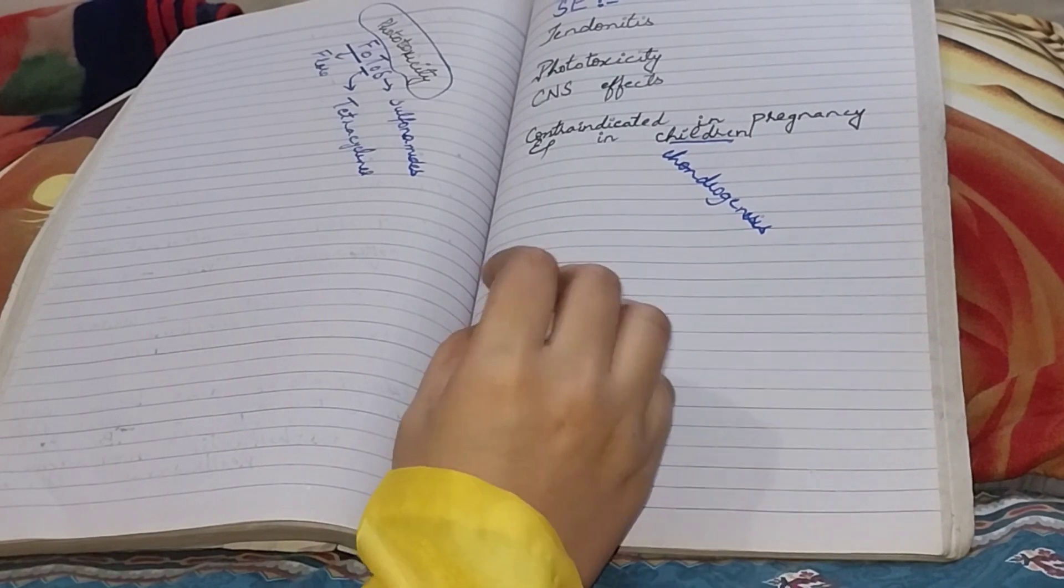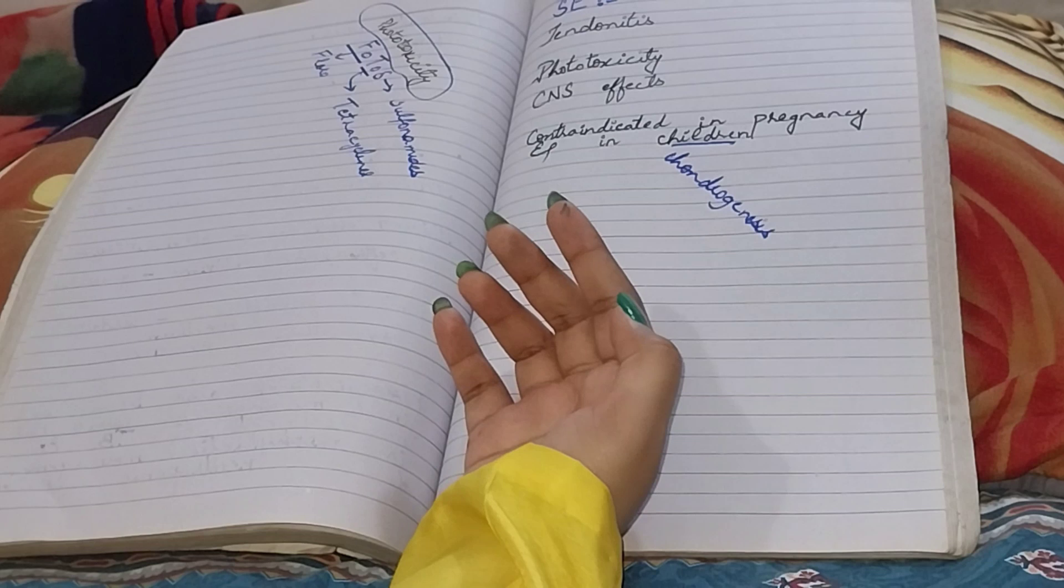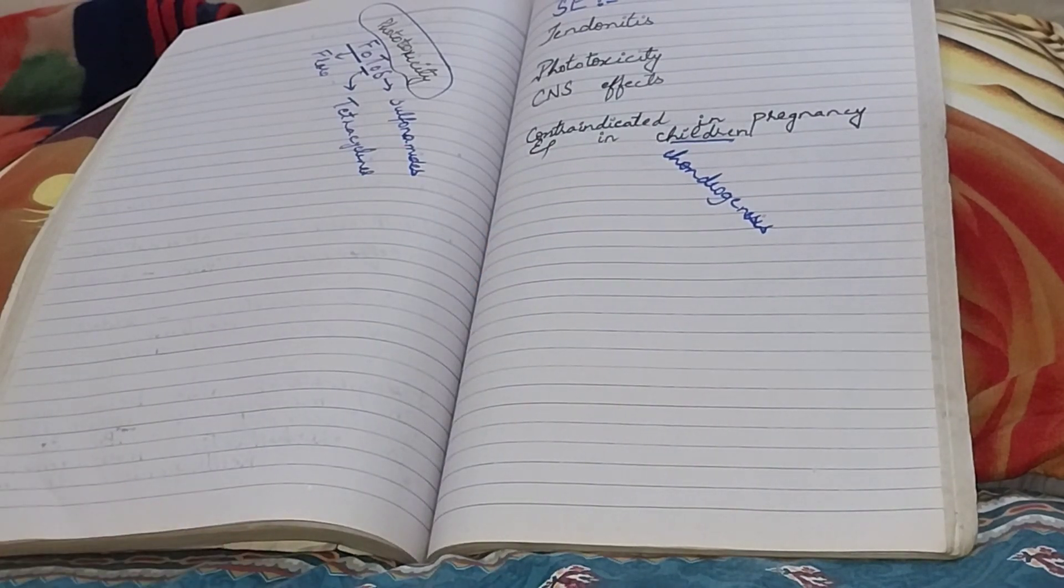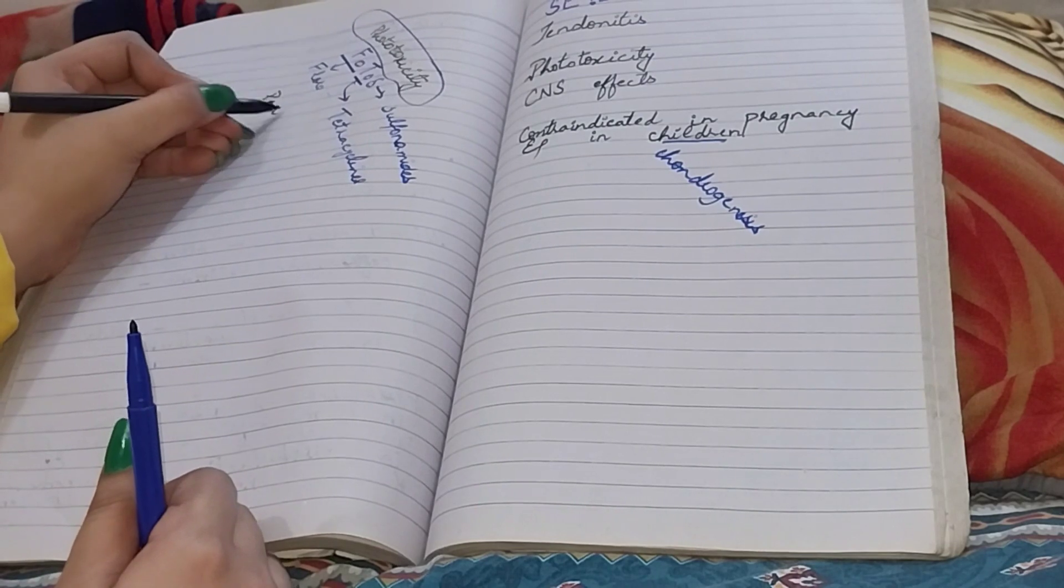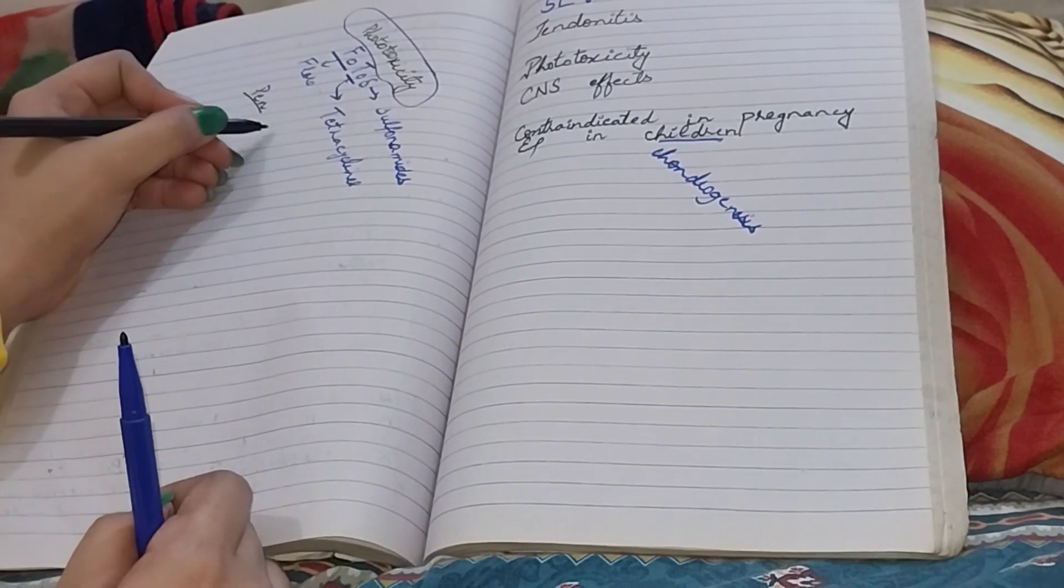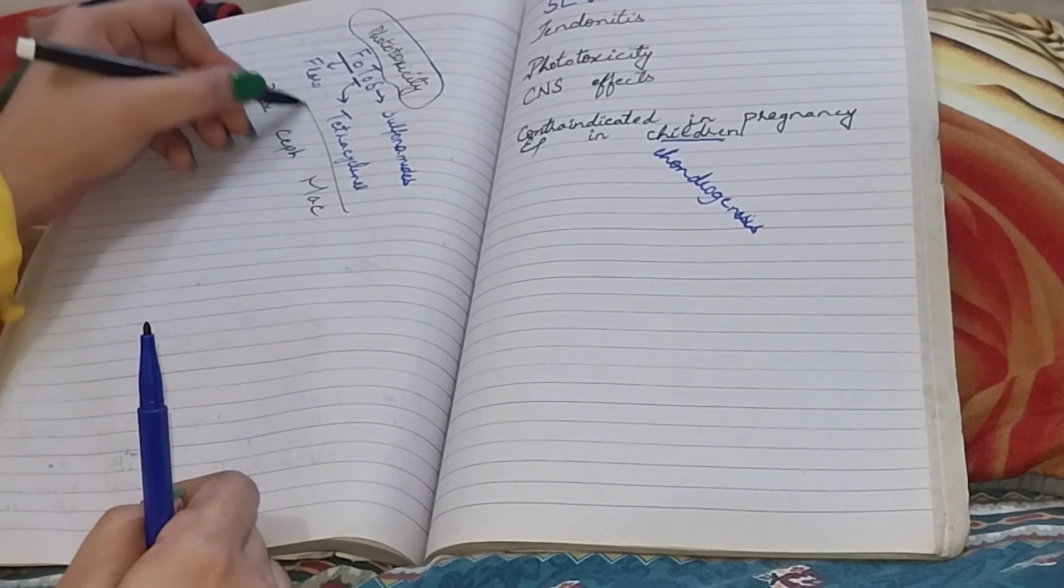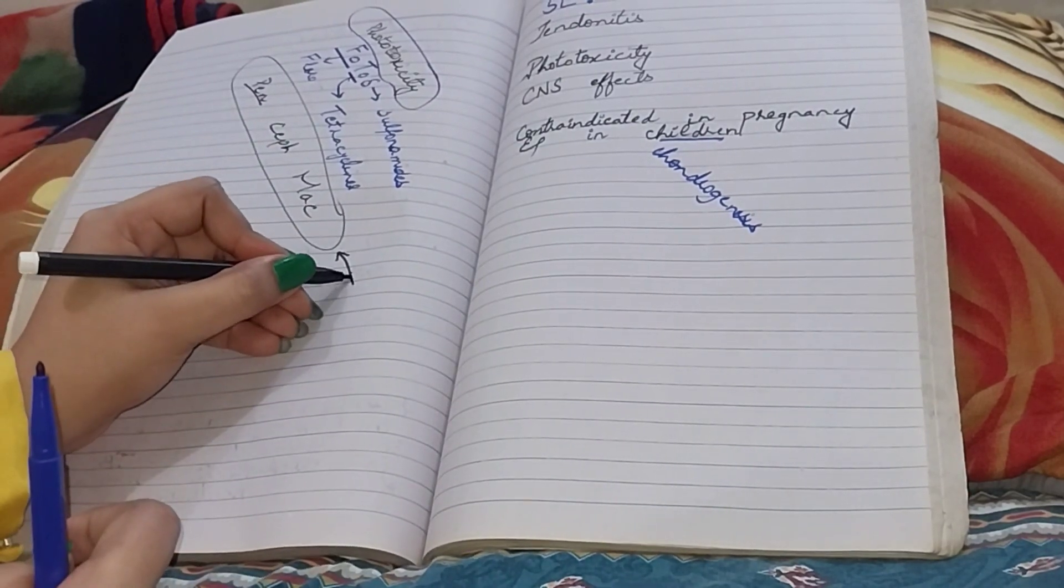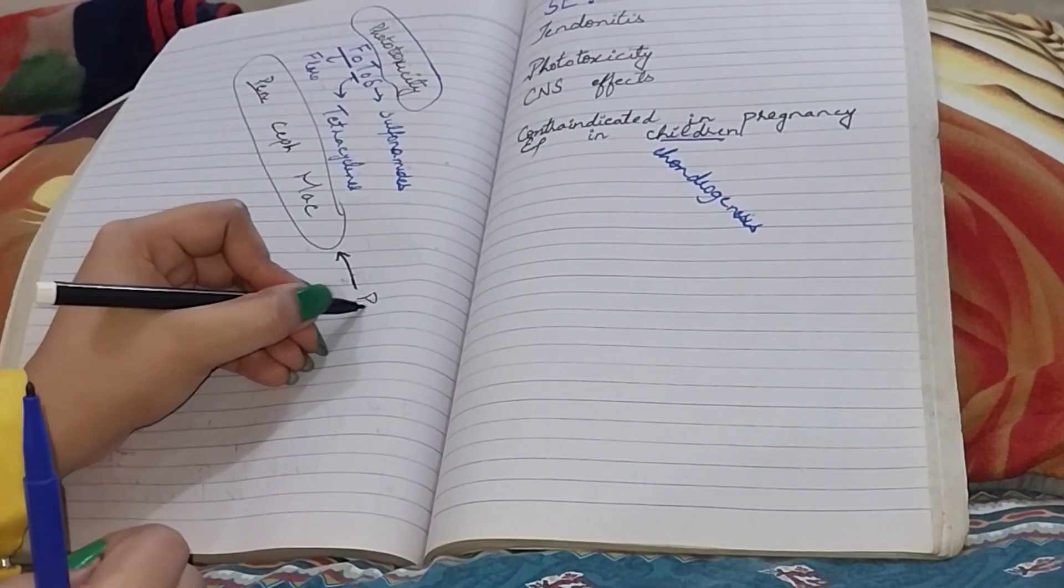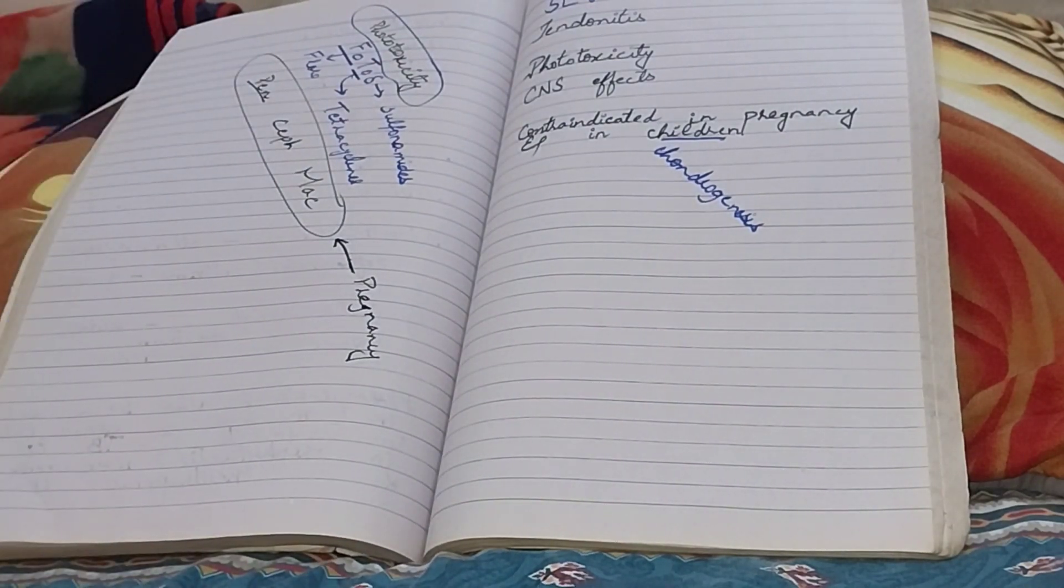As I just said, the drugs that are contraindicated in pregnancy are aminoglycosides, quinolones, sulfonamides, and tetracyclines. So there are certain drugs that are safe to use in pregnancy. These include penicillin, cephalosporin, and macrolides. Use these drugs to treat infections during pregnancy. Thank you, Allah Hafiz.